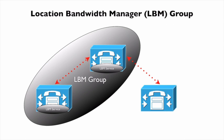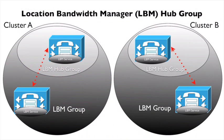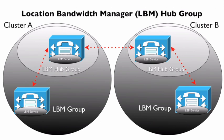We can also use locations-based CAC between clusters. Each cluster can have an LBM hub group. Here we have cluster A and cluster B, each containing Communication Manager servers running the LBM service. One server in each cluster is designated as belonging to an LBM hub group. A hub group communicates with a hub group in another cluster over a SIP trunk, forming a full mesh of connectivity. This allows cluster A to learn about the topology in cluster B and make optimal call routing decisions even between clusters.